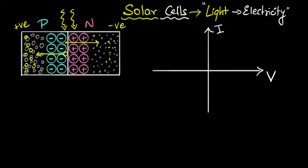As we shine light, more and more electron-hole pairs are continuously generated and swept, so they are continuously accumulated. But as more and more holes get accumulated on the p side, it becomes harder for further holes to come over because these holes repel the incoming ones. The same thing happens on the n side — as more electrons accumulate, it becomes harder and harder for even more electrons to accumulate; they slow down more and more.